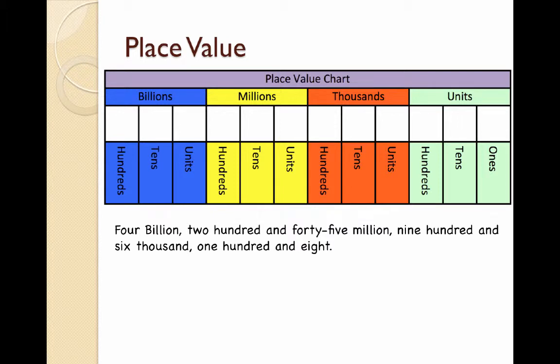Now we're going to go from a worded number, and we've got to try and write it in digits. To do this, I'm going to use my place value chart, although you may not need to. I'm going to write the 4 in the billions column, followed by 245 in the millions period, followed by 906 in the thousands period, followed by 108 in the units period.